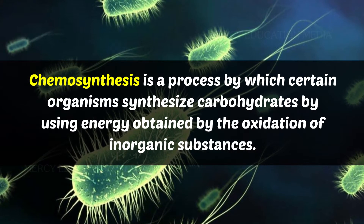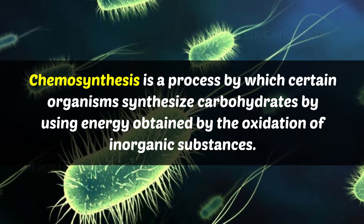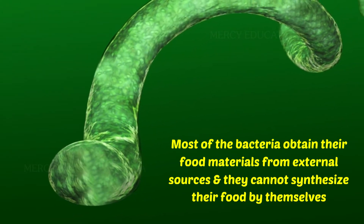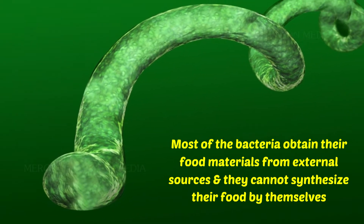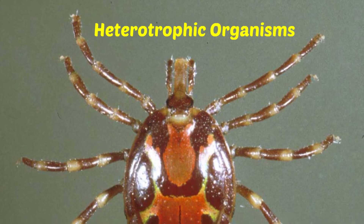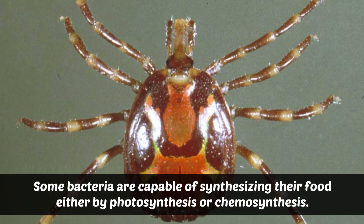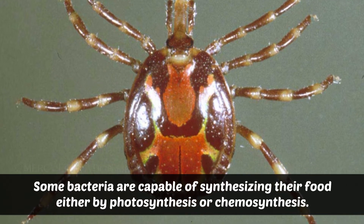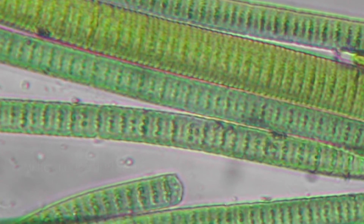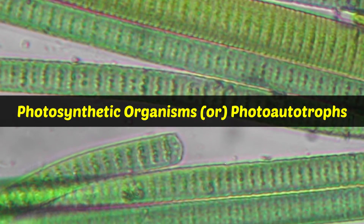Chemosynthesis is a process by which certain organisms synthesize carbohydrates by using the energy obtained by the oxidation of inorganic substances. Most bacteria obtain their food materials from external sources and cannot synthesize their food by themselves — they are called heterotrophic organisms. Some bacteria are capable of synthesizing their food either by photosynthesis or chemosynthesis. Organisms which use sunlight energy for the synthesis of food materials are called photosynthetic organisms or photo-autotrophs.